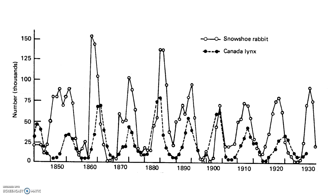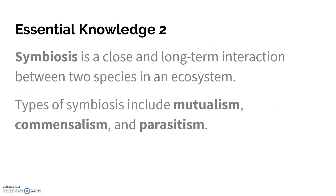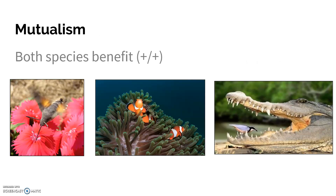This is because the predator is losing its source of food. Symbiosis is a long-term and close interaction between two species in an ecosystem. The types of symbiosis include mutualism, commensalism, and parasitism. In mutualism, both species benefit.